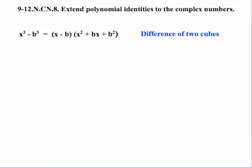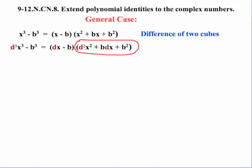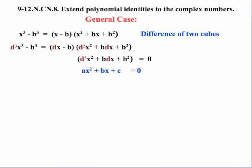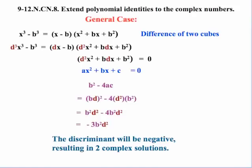That was the sum of two cubes. What about the difference of two cubes — does that apply here too? Going straight to the general case with a perfect cube coefficient for the x cubed term, we apply the quadratic formula to the resulting trinomial and look at just the discriminant. Substituting our values and solving, we again get minus 3b squared d squared, which is always negative. So yes, the discriminant will be negative, again resulting in two complex solutions.